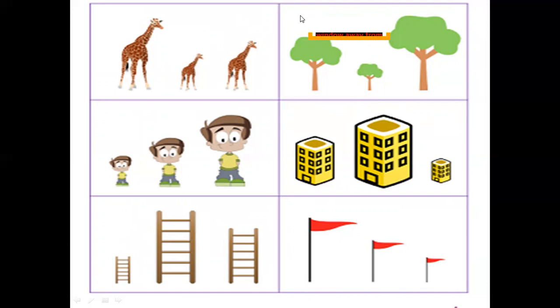Likewise, see the building. Three buildings. Last one is shortest. And the center, it is tallest. Again, the ladder also. First one is shortest. And second one is tallest. See the flag also.